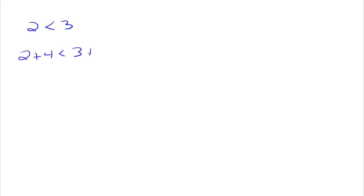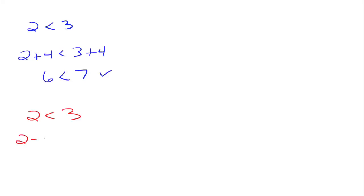Now let's talk about arithmetic with inequalities. We know 2 is less than 3. If we add 4 to both sides, we get 2 plus 4 is less than 3 plus 4, which is 6 is less than 7 — that's true. So we can add the same thing to both sides of an inequality and everything is fine. The same idea applies with subtracting: 2 is less than 3, subtract 1 from both sides, we get 1 is less than 2 — true as well. Just like an equation, we can add or subtract the same number to both sides of an inequality.